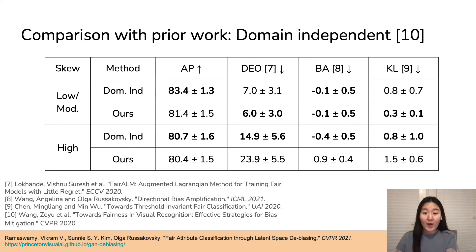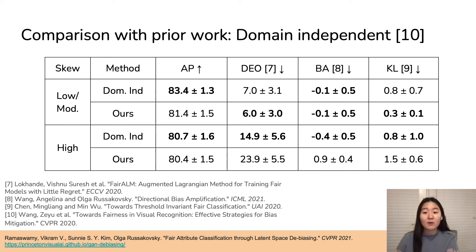Finally, we compare to Wang et al.'s best-performing domain-independent training method, which learns separate classifiers for each protected attribute group and combines them to leverage shared information. We group attributes into those with low-to-moderate skew and those with high skew, where skew indicates the proportion of positive target attribute images occupied by the dominant protected attribute group — for example, if 90% of smiling images are of women, the skew is 0.9. We find ours performs better for attributes with low-to-moderate skew, whereas domain-independent training performs better for high-skew attributes.